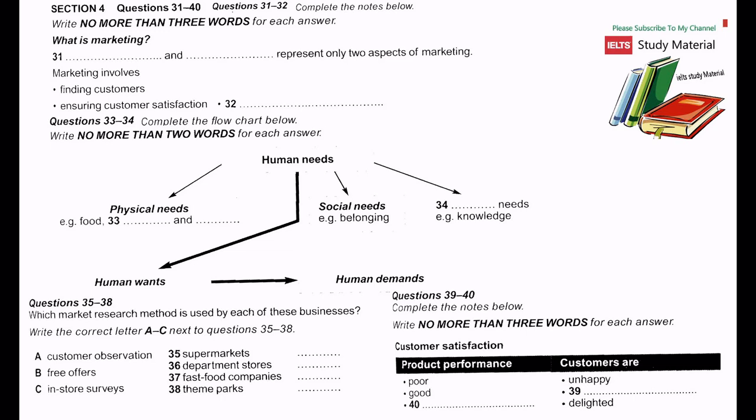As societies evolve, members of that society start to see things not so much in terms of what they need, but in terms of what they want. And when people have enough money, these wants become demands. Now, it's important for the managers in a company to understand what their customers want if they're going to create effective marketing strategies. So, there are various ways of doing this.